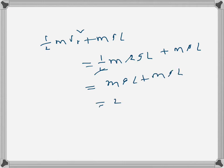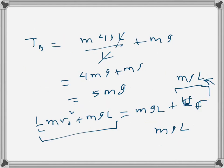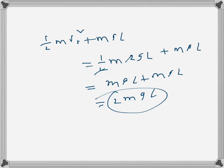We know the initial mechanical energy was 2mgl — consistent with the ball reaching point D where all energy was potential energy mg(2l). Since the ball finally comes to rest at B with zero mechanical energy, the total reduction in mechanical energy is 2mgl.